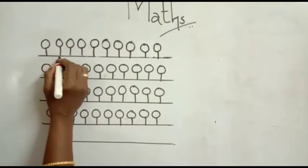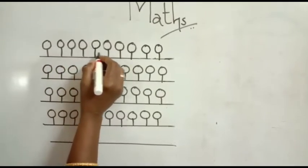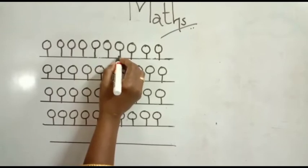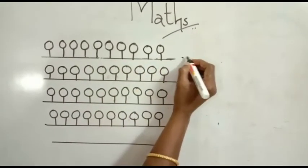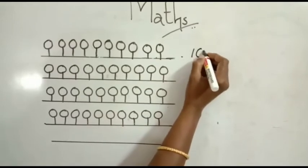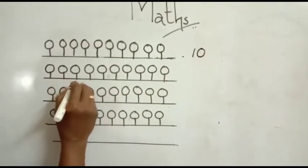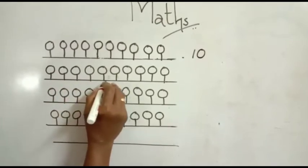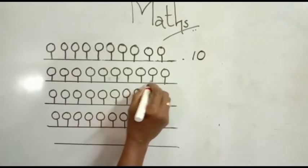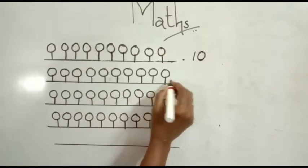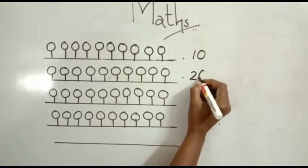Listen children. Let's count it. 1, 2, 3, 4, 5, 6, 7, 8, 9, 10. One ten. Next, 11, 12, 13, 14, 15, 16, 17, 18, 19, 20. Two tens make 20.